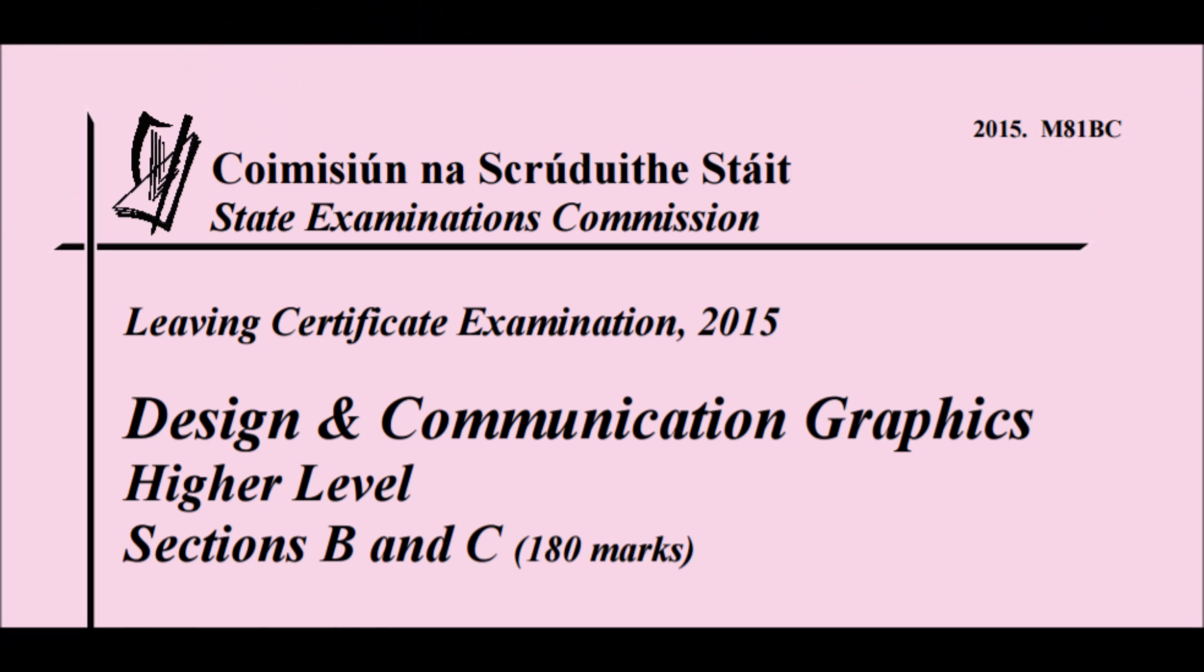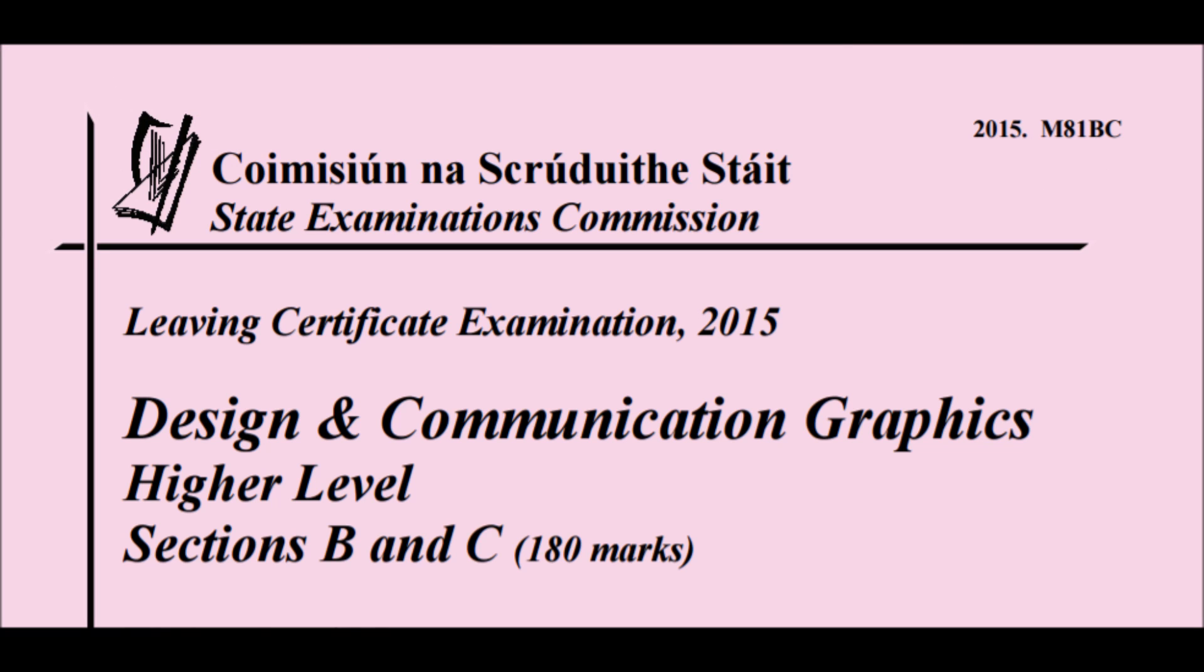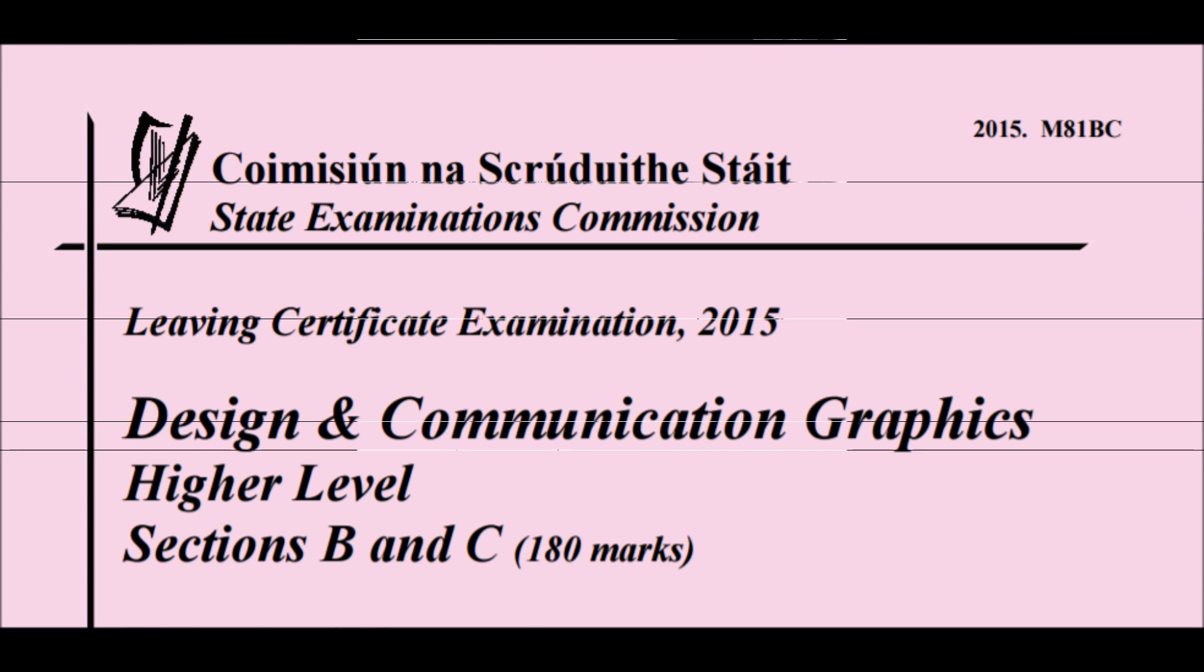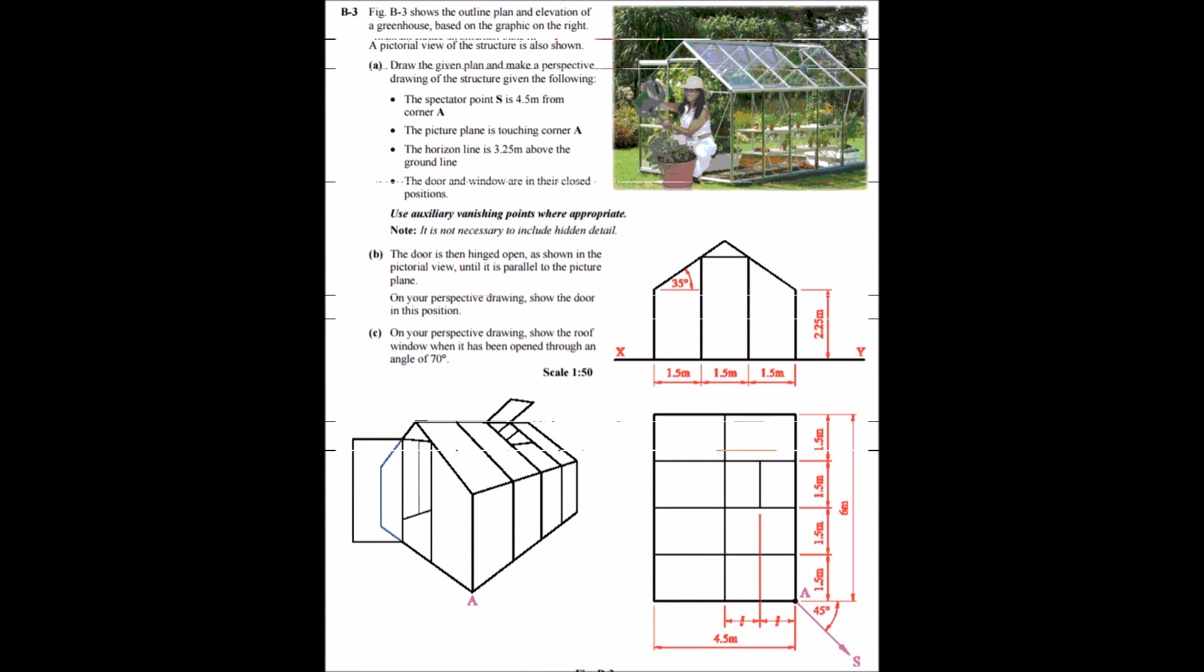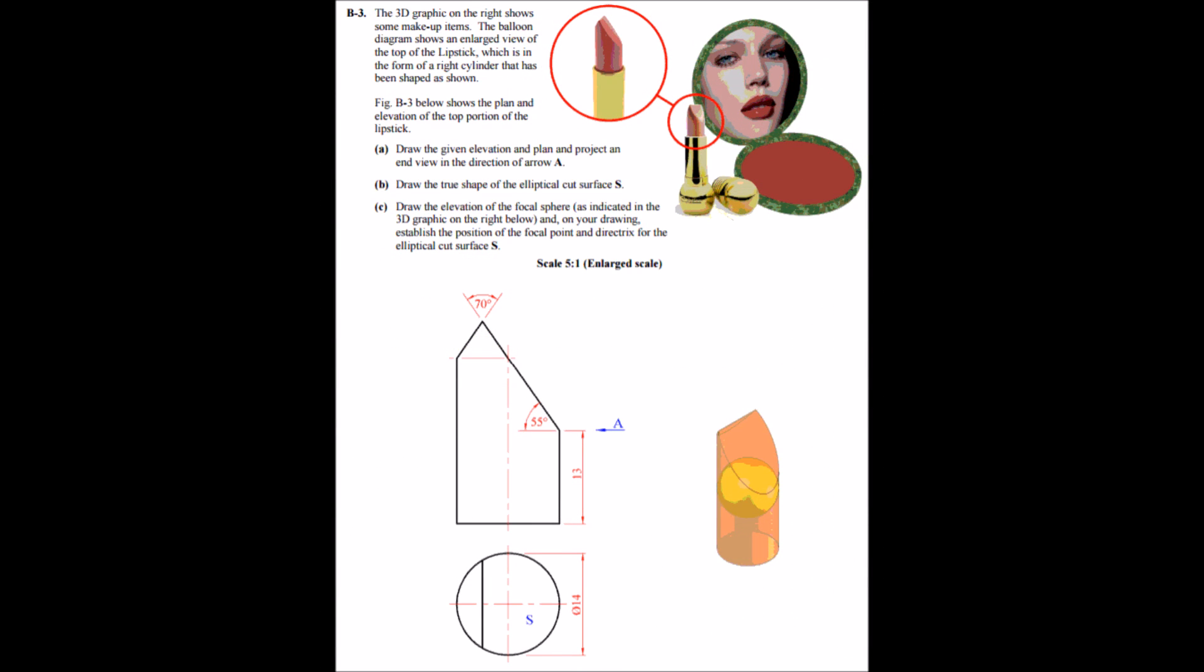Now, Section B. The three topics I'm looking at here is intersection of solids, perspective, and then conic sections. Now, I know conic sections came up last year. But I'm kind of looking at conic sections questions such as the 2011 B3 question, where you have your focal sphere and so on. So I'm kind of liking a question like that to come up.